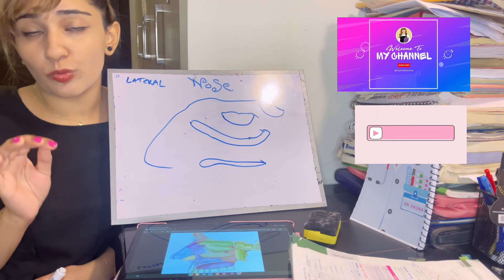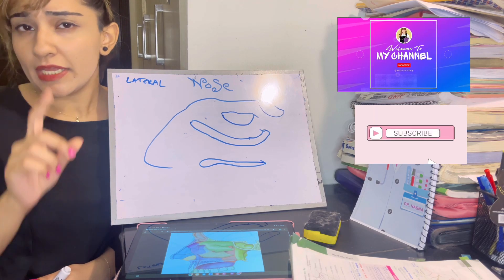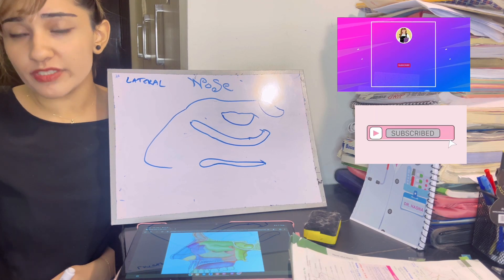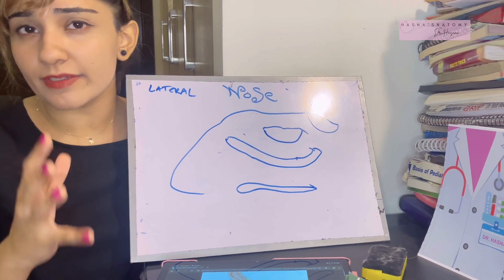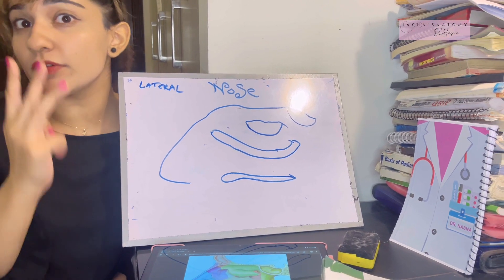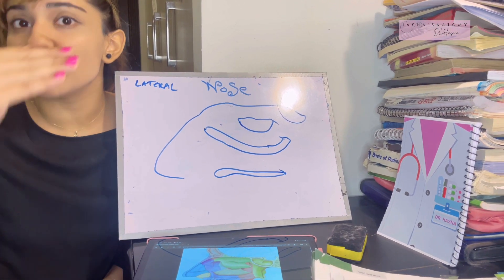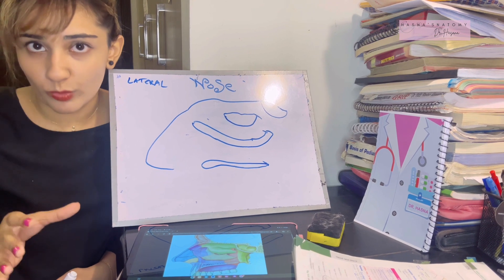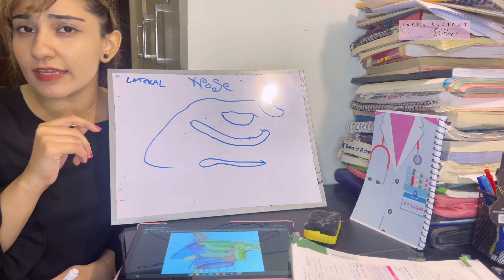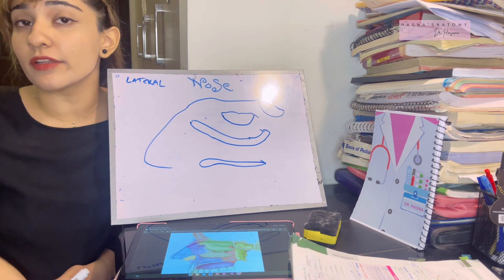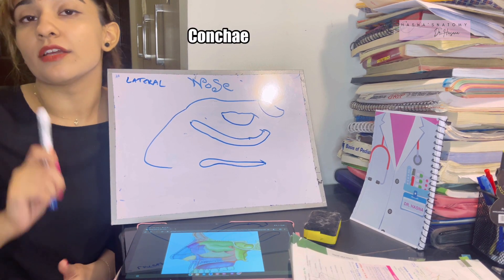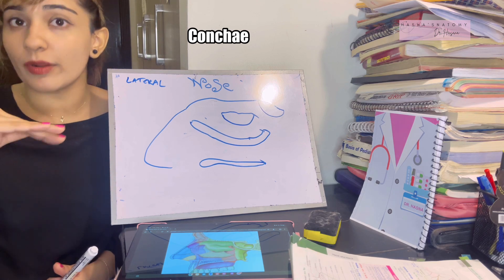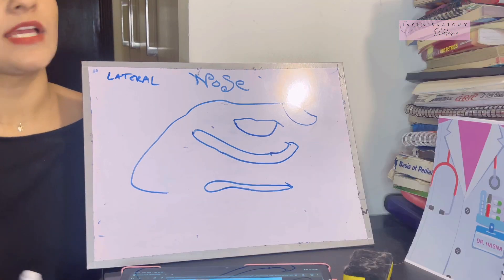Let's talk about the lateral wall of the nose. This is a very interesting part of the nose. Basically, what happens in the lateral wall, it consists of three projections coming out of various bones. What are these projections exactly called? They are called the conchas — these are shelf-like projections from bones.